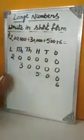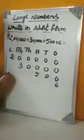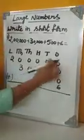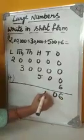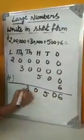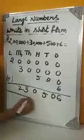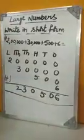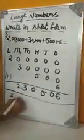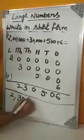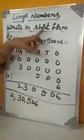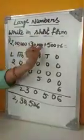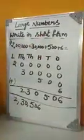There is no value in the tens place. So we will add the given numbers: 0 plus 0 plus 0 plus 0 plus 6, then 0, 5, 0, 3, 2. So how will we read this number? It is 2,30,506. This is how we write the expanded form in short form.